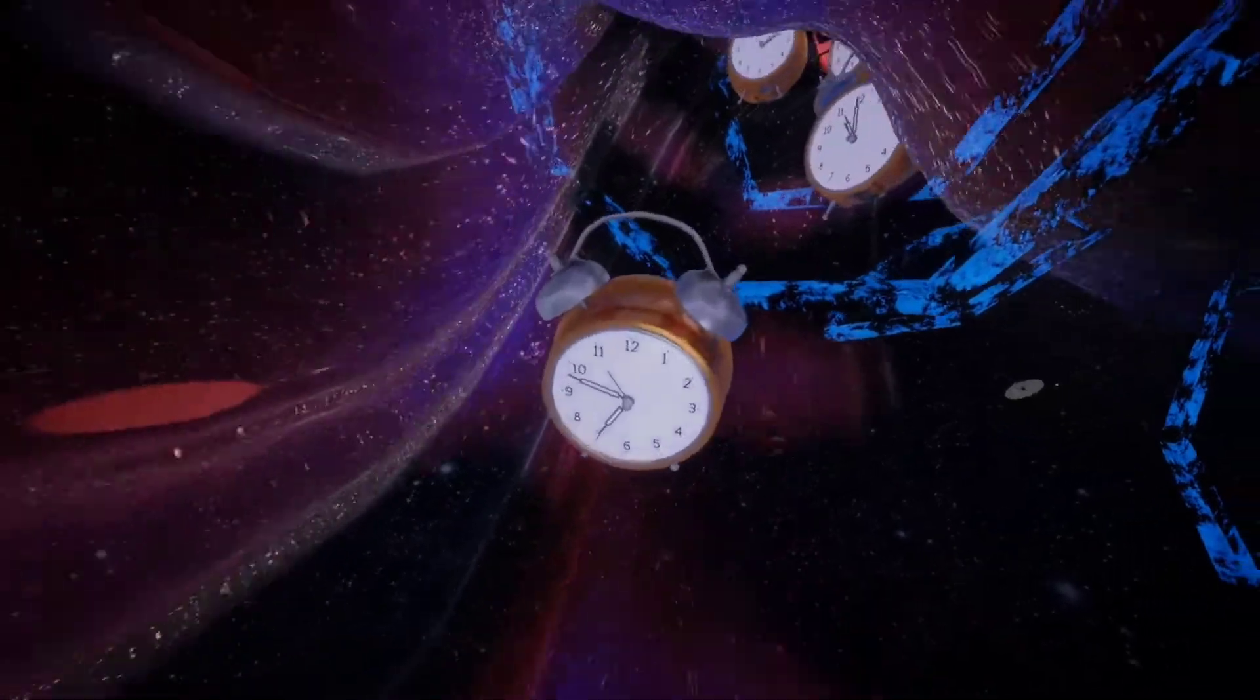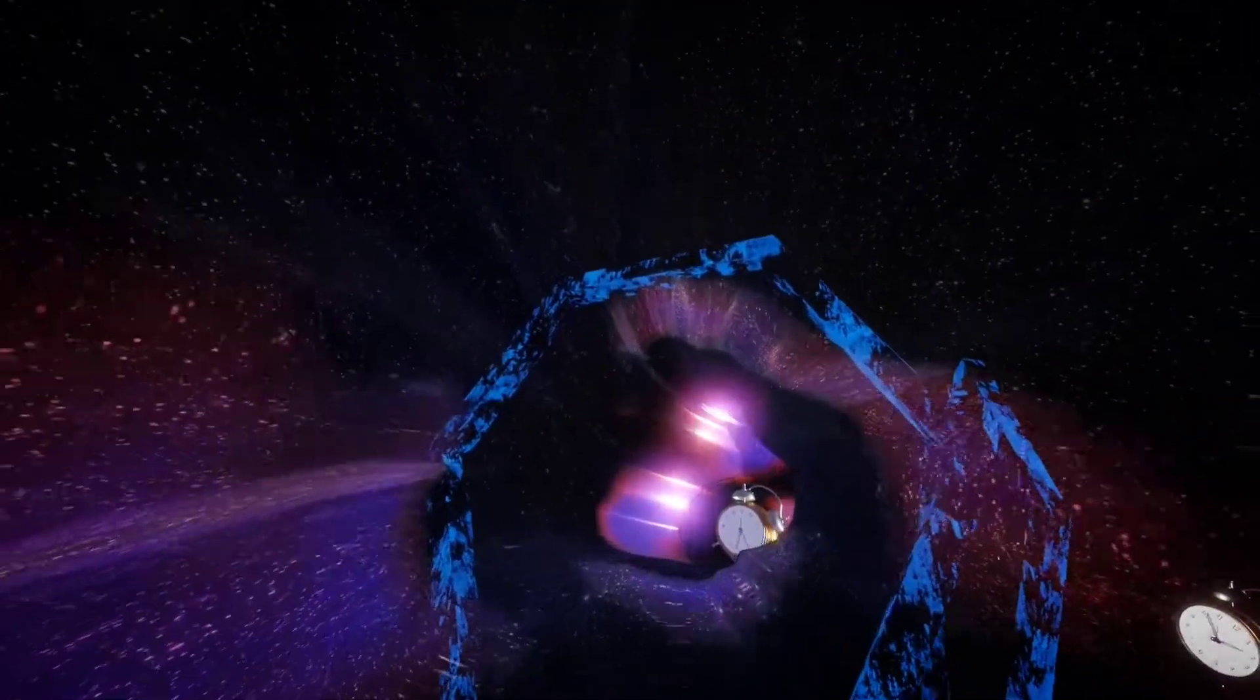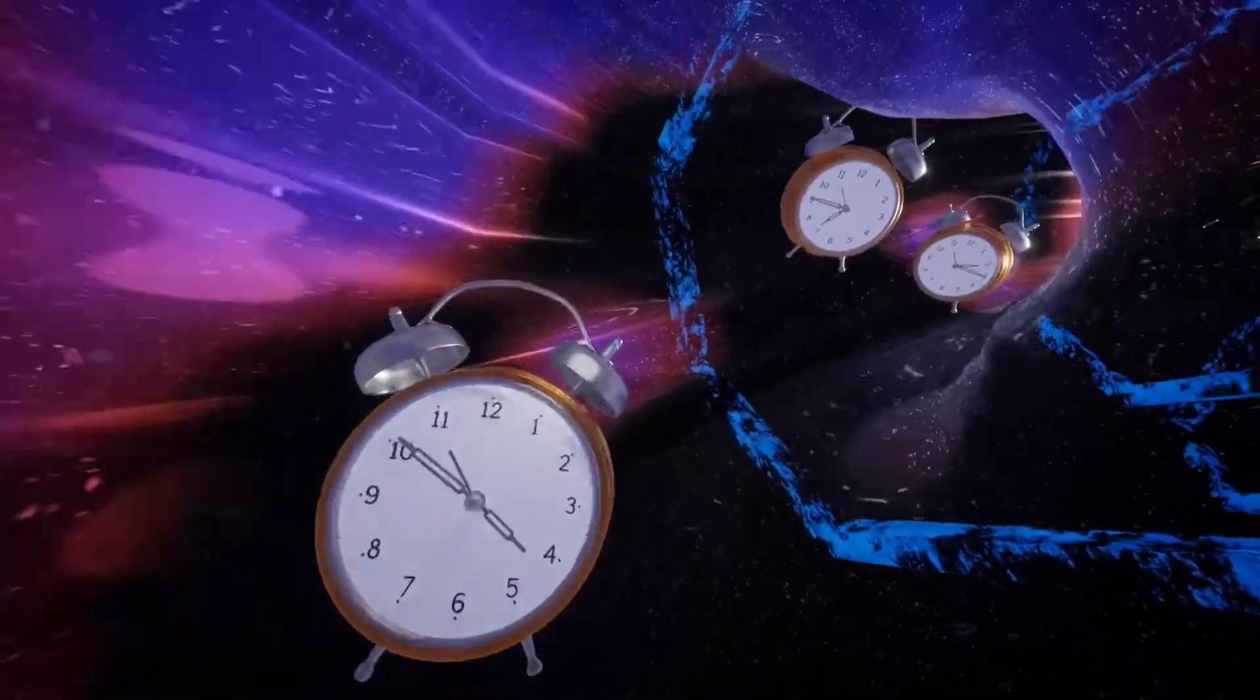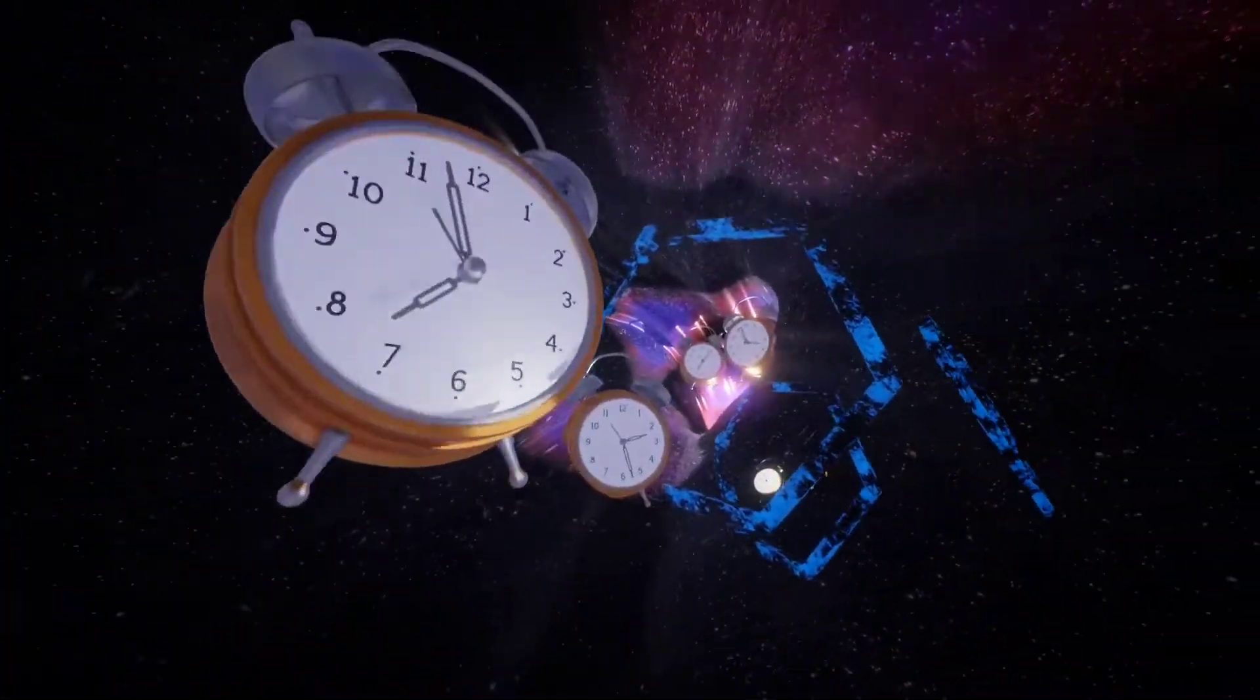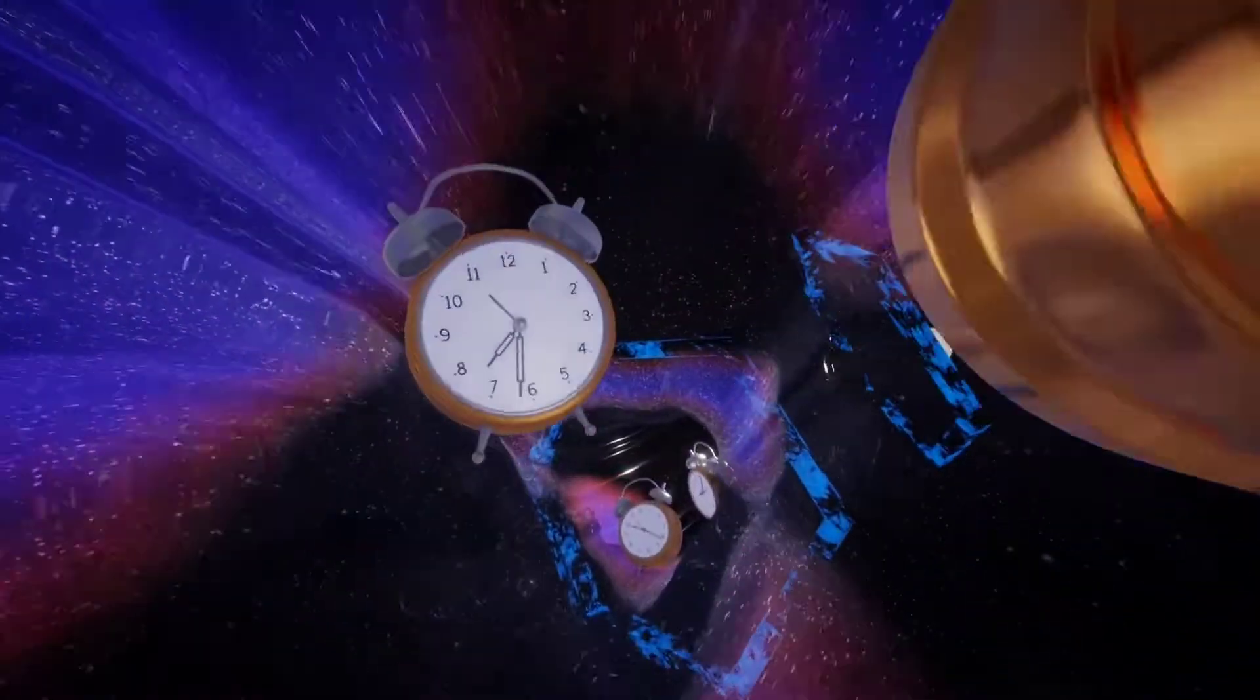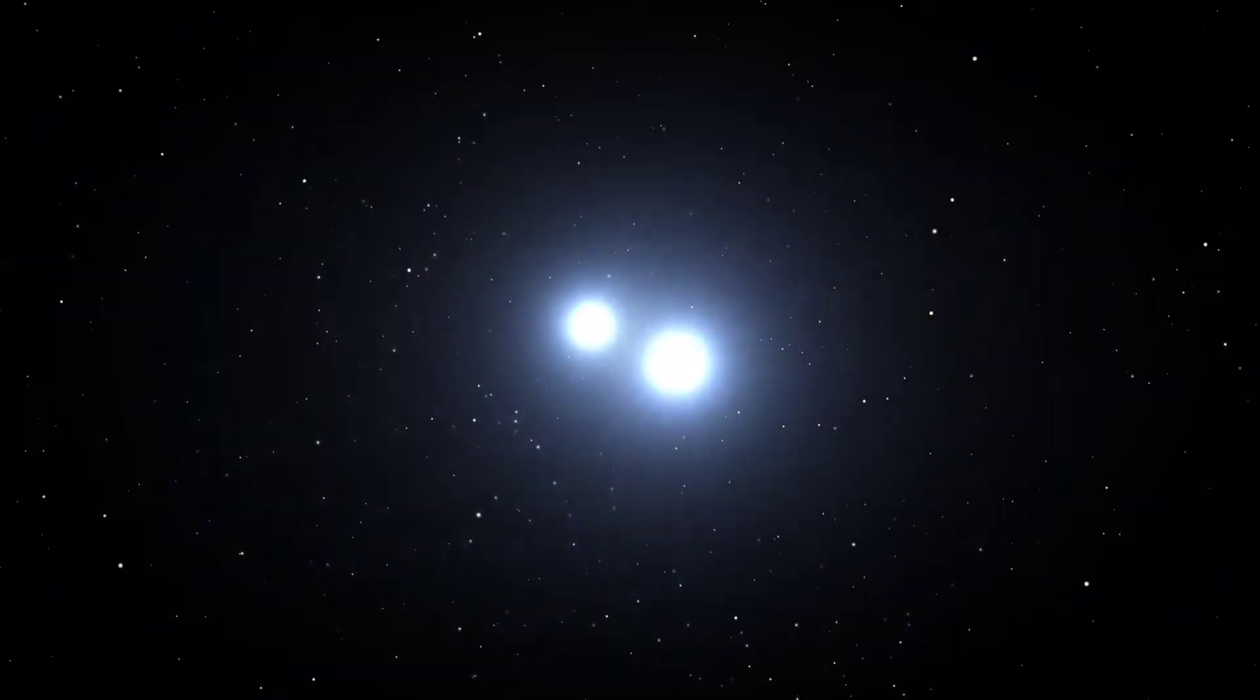Einstein proposed that space is not empty. Instead, it is a four-dimensional fabric consisting of three space coordinates and one time coordinate. The model of this space-time fabric allowed for the calculated prediction of many phenomena in the universe, such as black holes, wormholes, and gravitational waves.